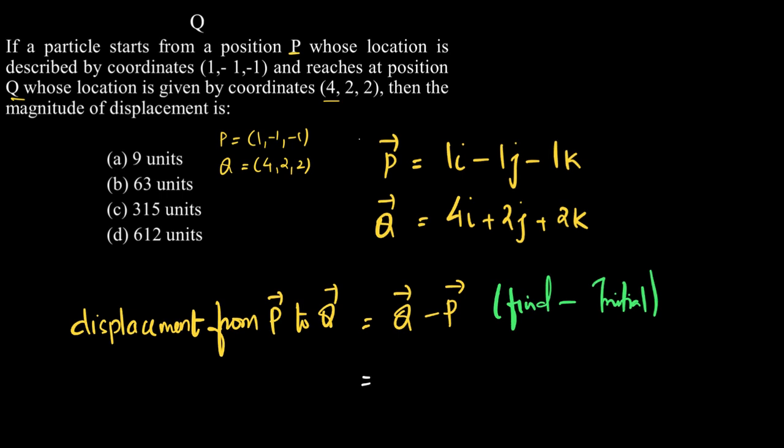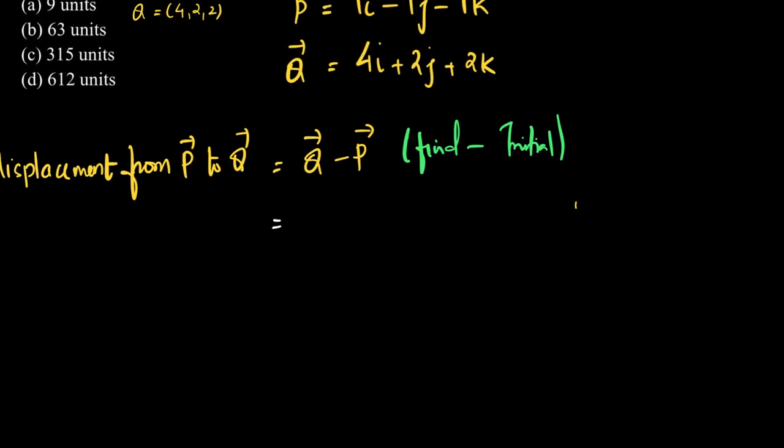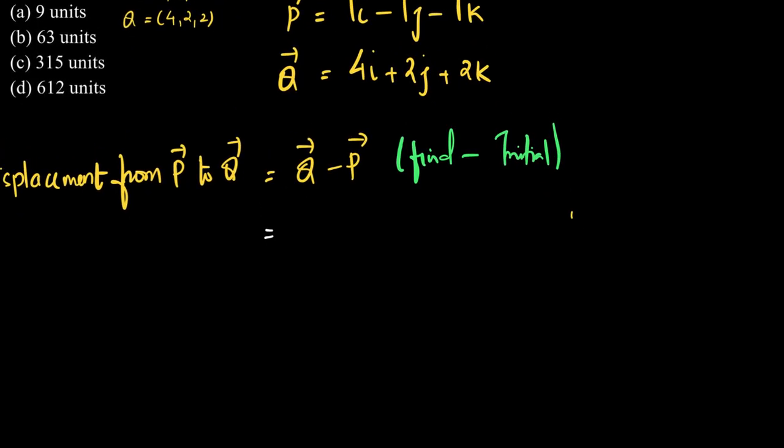So vector PQ will be equal to vector Q minus vector P, which is basically (4-1)i + (2-(-1))j + (2-(-1))k. So it goes like this: 4 minus 1, 2 minus minus 1, 2 minus minus 1.